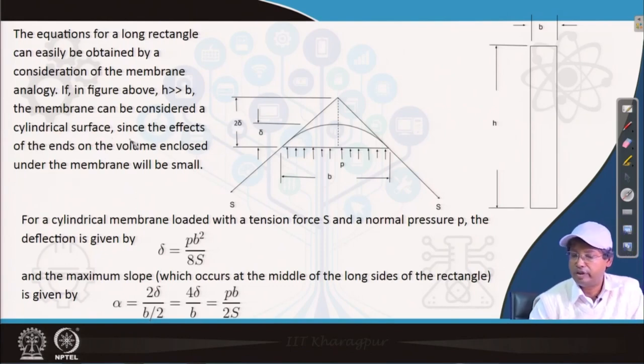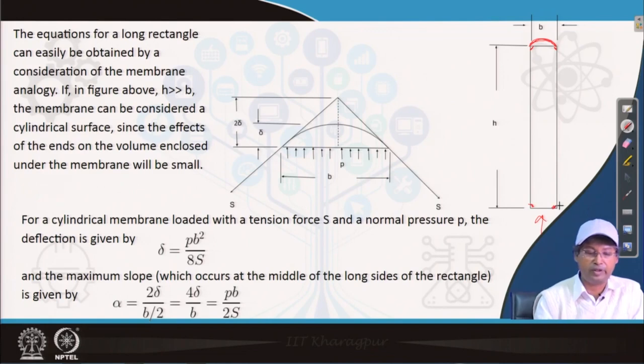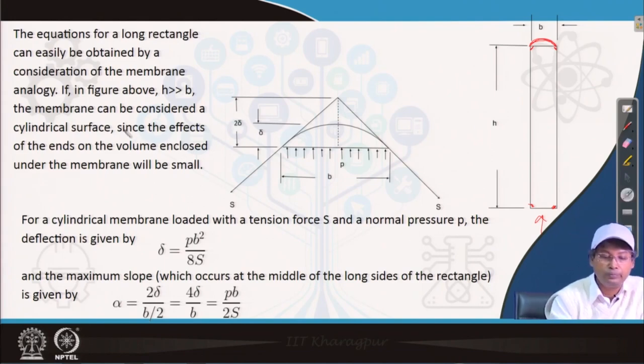We will try to find out solution for a very easy problem. The equation for a long rectangle can easily be obtained by a consideration of the membrane analogy. If in the figure above H is very greater than B, the membrane can be considered a cylindrical surface. If we look from this side this becomes something like this. There will be changes definitely at these corners, but we can easily neglect that since we are going for approximate analysis. That cylindrical surface we will get. Since the effects of the ends on the volume enclosed under the membrane will be very small at these corners, we can easily consider that as a cylinder.